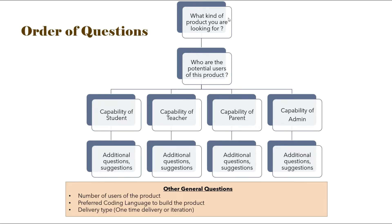The first question will answer what exactly the customer is looking for. The second question will give us the list of potential users of the product. The next question will give us the capabilities of each user type, so we know what functionalities the product should have. The next question can get some additional information related to any of the capabilities.